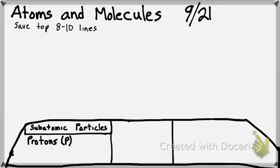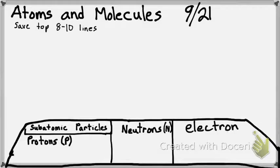So there are three subatomic particles. There are protons, neutrons, and electrons. Remember that you can speed up, slow down, and pause at any point in time.